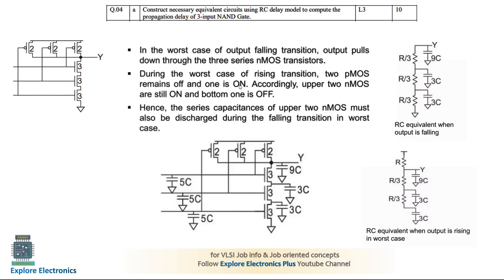For the worst case rising transition, at least two P-MOS transistors will be off and at least one will be on. The upper two N-MOS transistors are still on and the series capacitance of the upper two N-MOS must also be discharged during the falling transition in the worst case. Considering these cases, write the RC equivalent circuit for output falling and output rising, showing the complete transistor capacitances in the diagram.